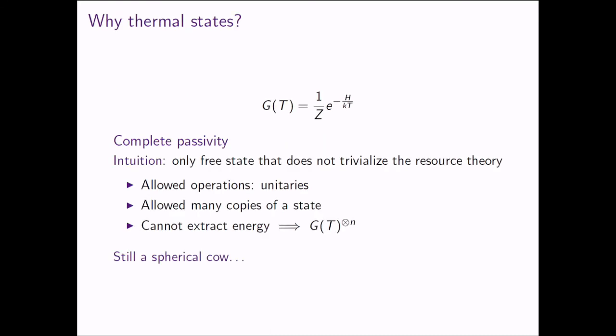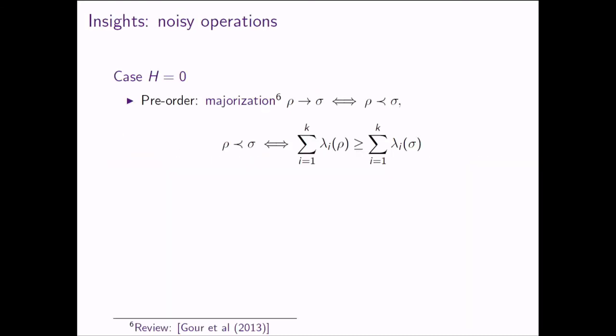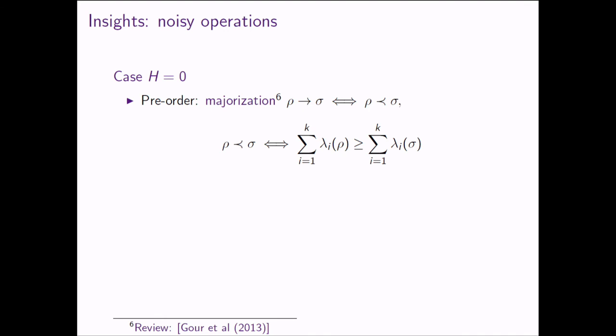What would be more interesting is a resource theory where you can model the heat bath as something you have less information about than being exactly in a Gibbs state — we'll go into this later. I think maybe I'll stop the first part here, and in the second part we can go into results. Are there questions at this stage?